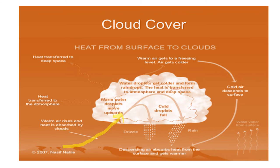In cloudy regions, daily temperature is lower because the cloud cover obstructs the path of solar rays, so less solar heat is received during the day. At night, clouds also act as an obstacle to heat loss through radiation. In cloudless regions, temperature rises very high during the day and drops significantly at night through radiation. So the temperature difference in cloudless areas is very large. This is how cloud cover affects the climate of a place.